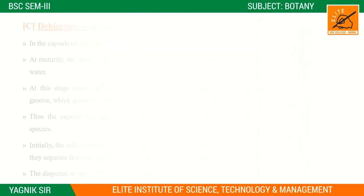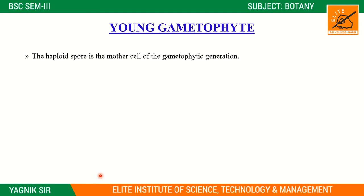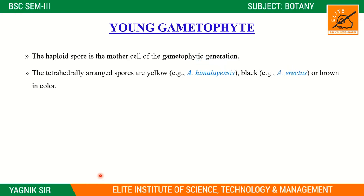The next stage is the young gametophyte. After spores are released, they enter a rest period of a few weeks to a few months. Under suitable conditions, the spore germinates. Prior to germination, the spore absorbs water and swells. The spore is haploid; the gametophytic phase is haploid and the sporophytic phase is diploid.